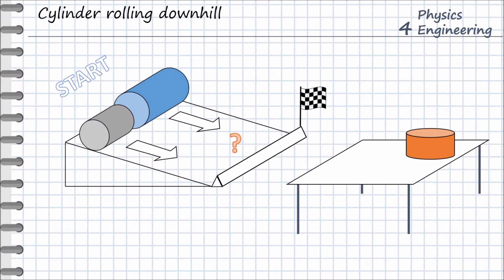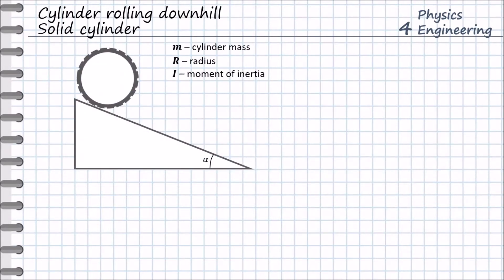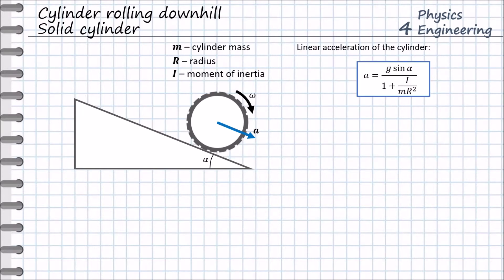We study today how the cylinder's rolling behavior depends on its properties. As a starting point, we will refer to the problem where the body is rolling down an inclined plane. The body has a mass m, radius r, and a general moment of inertia. The body has a linear acceleration a and angular velocity omega. This task was already solved in the previous video, where we obtained the linear acceleration by five different methods. The linear acceleration is represented in general form, where I is the moment of inertia of the rolling body.